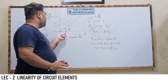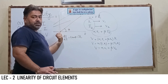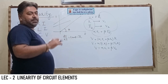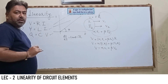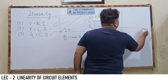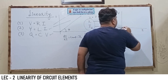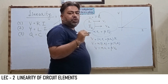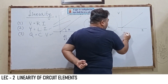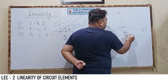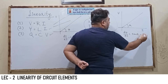Graphically, the VI characteristic is a straight line passing through the origin. Similarly, for an inductor, if we draw the ψ-i characteristic (flux linkage versus current) and it is a straight line passing through the origin, then it represents a linear inductance. The slope — tangent of theta1 — equals the inductance L.